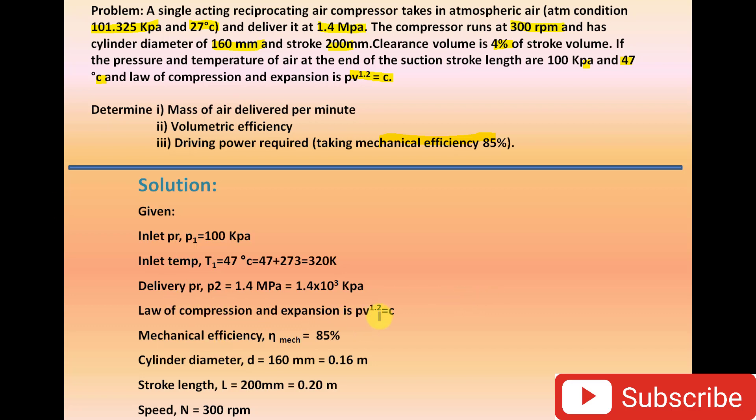Mechanical efficiency is given as 85%. Cylinder diameter is 160 mm, which converts to 0.16 m. Stroke length is given as 200 mm, which is 0.2 m. Speed is given as 300 rpm.